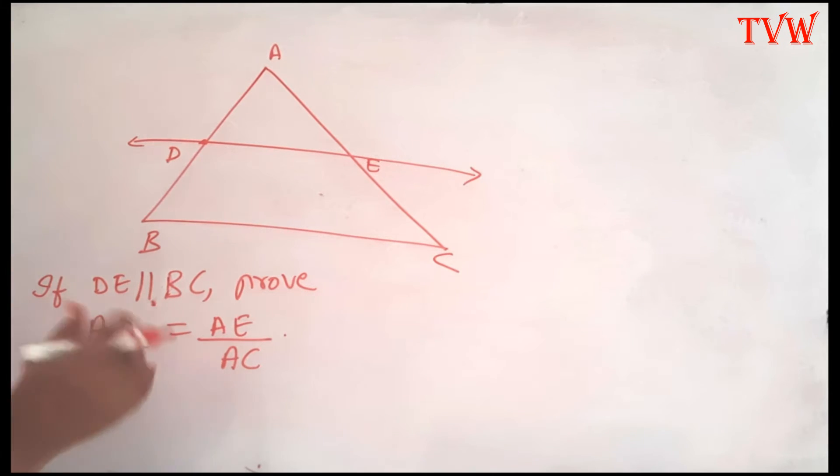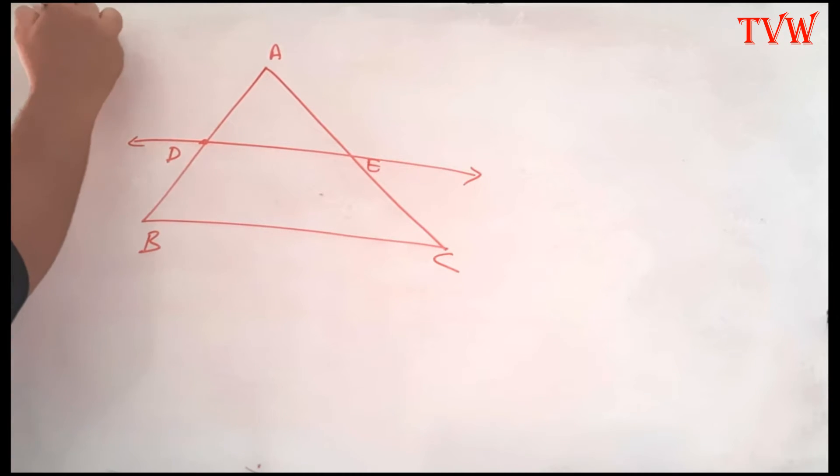So this is what we have to prove. How are we going to prove this? Let me write this here: to prove AD divided by AB is equal to AE divided by AC. This is what we are going to prove.